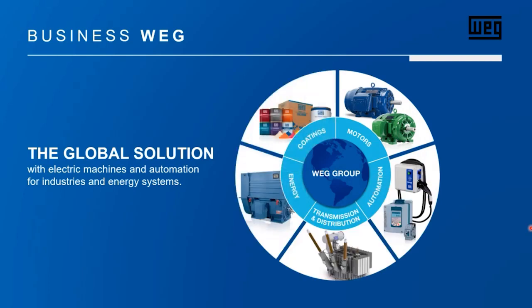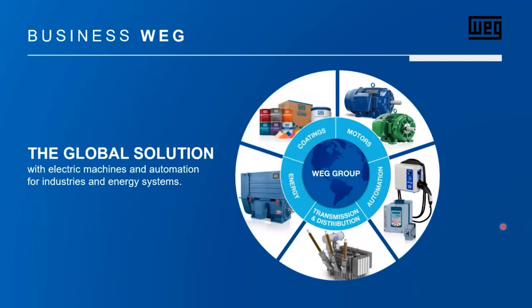Before we get started with the main presentation, I would like to give you a short introduction about VEG as a company. VEG is a group composed by five business units: motors, coatings, energy, transmission and distribution, and automation, which is the business unit that I'm working from.